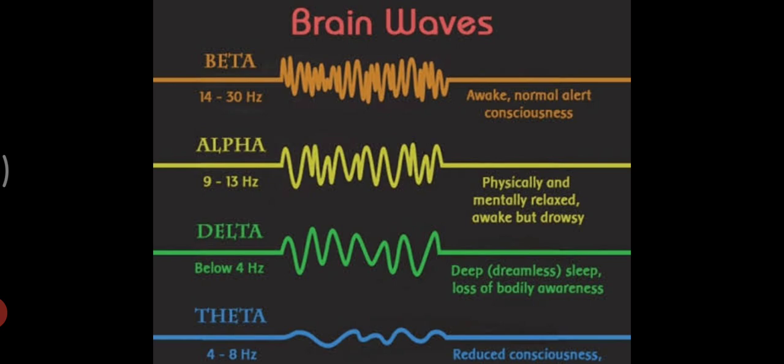Beta is a fast activity present when we are alert, attentive, engaged in problem solving, judgment, decision making, or focused mental activity. Next is the alpha brain wave.